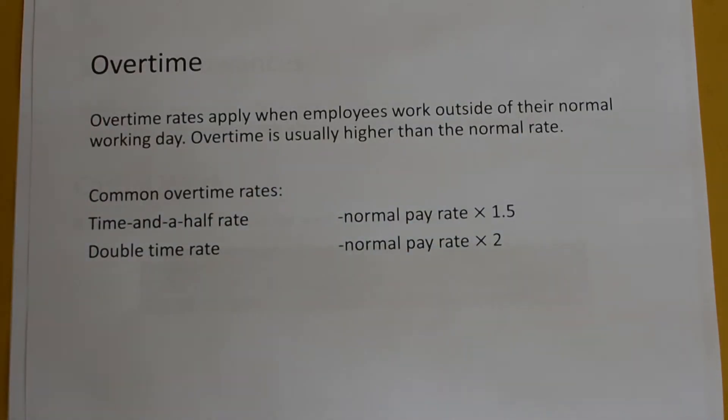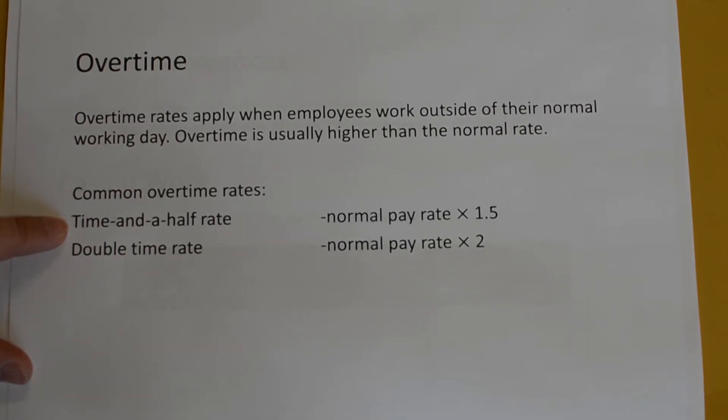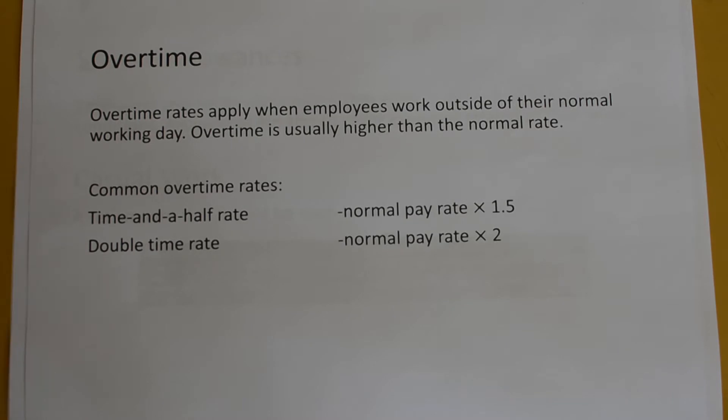When you're working a wage, you are usually rostered for a certain amount of hours and if you work more than that, you occasionally earn an overtime rate. Overtime rates are generally higher than your normal wage and common rates are time and a half, which is one and a half times your normal rate, and double time, which would be twice as much as you normally earn per hour.